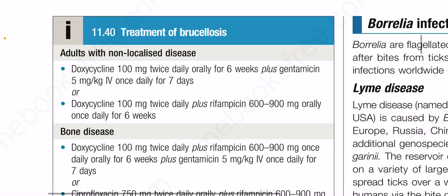For treatment of brucellosis in adults with non-localized disease: doxycycline 100 mg twice daily orally for six weeks plus gentamicin 5 mg/kg IV once daily for seven days; or doxycycline 100 mg twice daily plus rifampicin 600 to 900 mg orally once daily for six weeks.